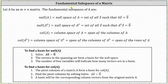Welcome to a lesson on how to determine the fundamental subspaces of a matrix. Let A be an m by n matrix. The fundamental subspaces of A are the null space of A, which is equal to the set of all vectors x such that matrix A times vector x equals a zero vector, and the null space of A transpose, which is equal to the set of all vectors x such that A transpose times vector x equals a zero vector.